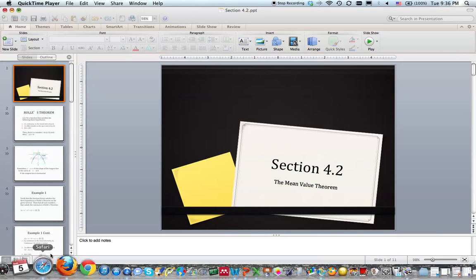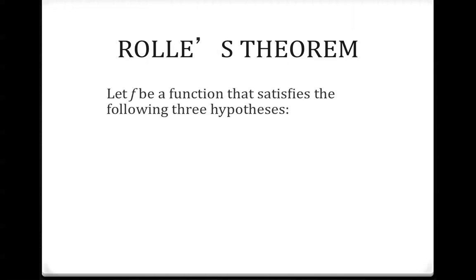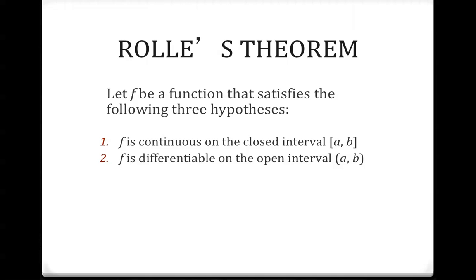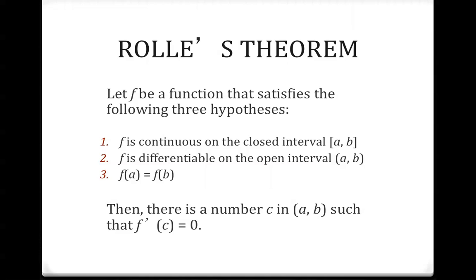Section 4.2: The Mean Value Theorem. Rolle's Theorem: Let f be a function that satisfies the following three hypotheses. f is continuous on the closed interval [a,b], it is differentiable on the open interval (a,b), and f(a) equals f(b). Then there is a number c such that f'(c) equals 0.